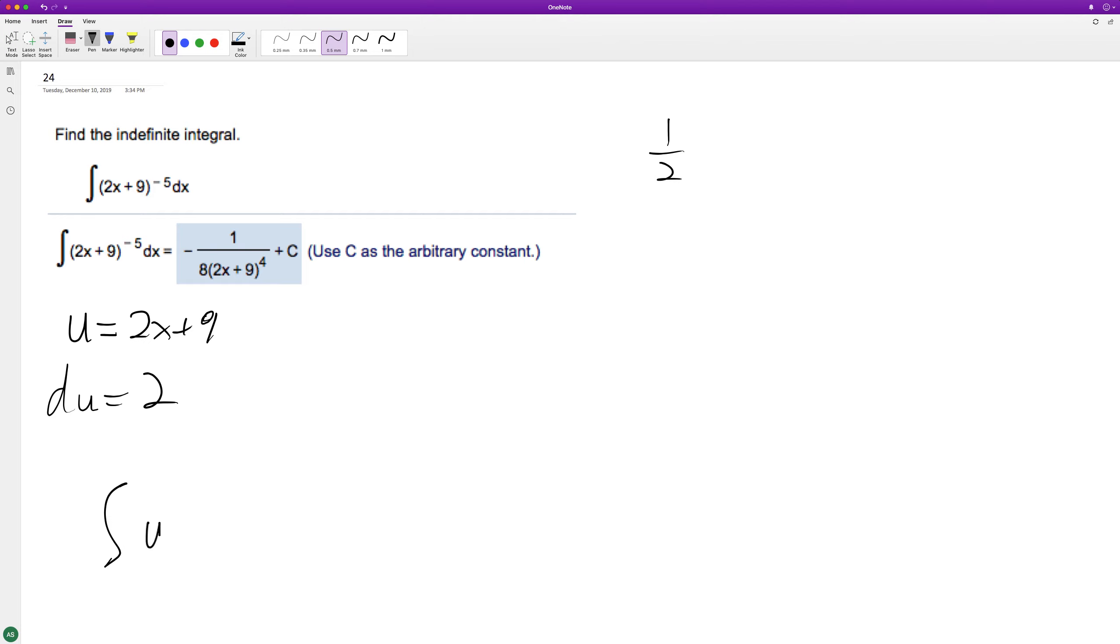All right, so we'll have u raised to the negative 5 times 1 half du. So we'll put the 1 half out in front.